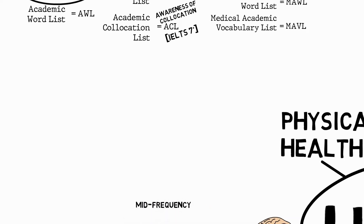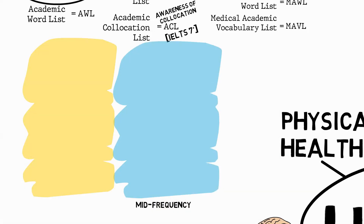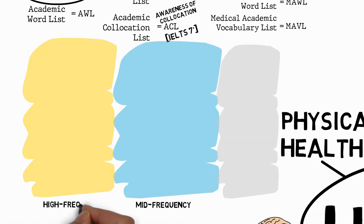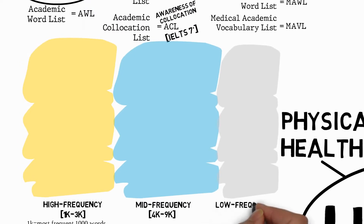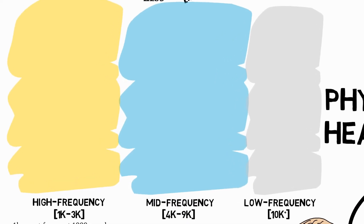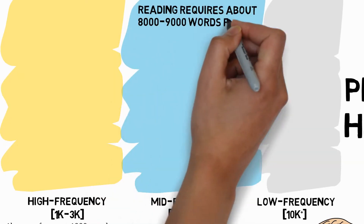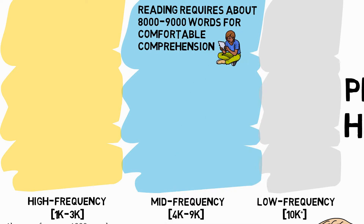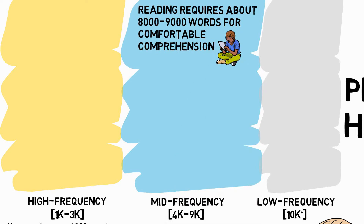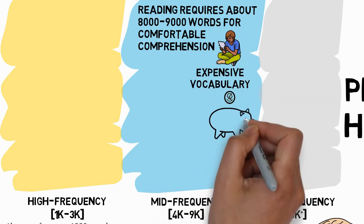If you really want to enrich your vocabulary, you need to focus on mid-frequency vocabulary. Broadly speaking, vocabulary can be divided into three kinds: high frequency, which is the first three thousand words (sometimes called 1k, 2k, and 3k); mid-frequency, which is 4k to 9k; and low frequency, which is 10,000 and above. Reading requires knowledge of about 8 to 9,000 words for comfortable comprehension. A former colleague used to call this kind of vocabulary 'expensive vocabulary.'